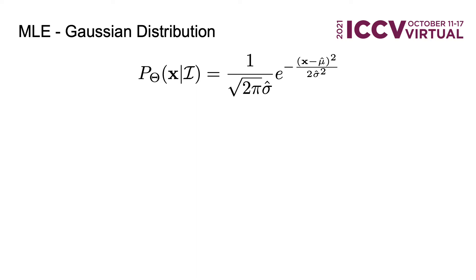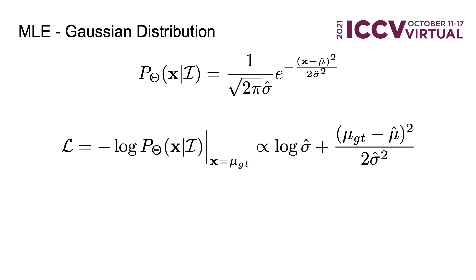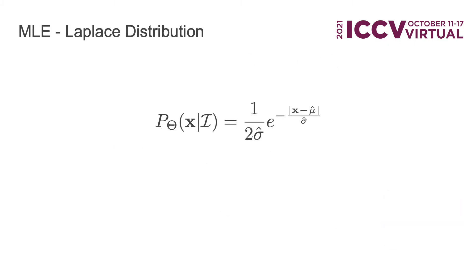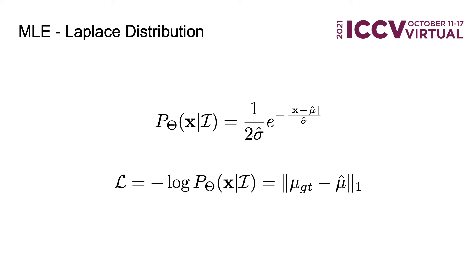If we assume the predicted density function is a Gaussian distribution, the network can predict two values, mu and sigma, to represent a Gaussian distribution. If we assume the variance is a constant, the MLE loss becomes a standard L2 loss. Similarly, if we assume the distribution is a constant-variance Laplace distribution, the MLE loss is actually the standard L1 loss. Therefore, choosing a given regression loss is essentially choosing a given distribution family.